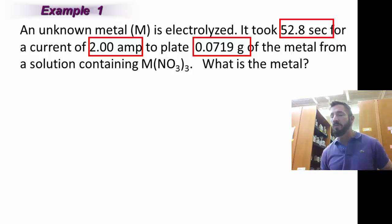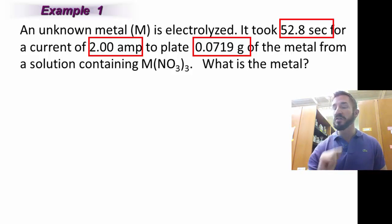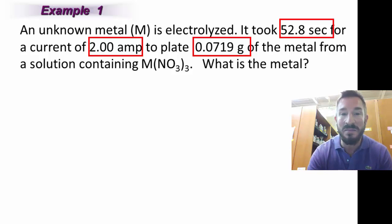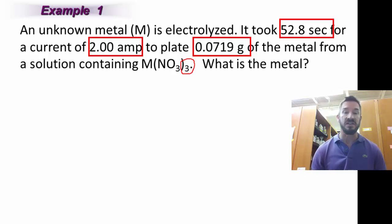Now one other important thing I hope you noticed from this. Remember I said we always want to look at the number of moles of electrons per that metal. Notice this metal is going to have what charge on it? Hopefully you're going to realize that metal would have a charge of positive 3. So let's get started with this problem.